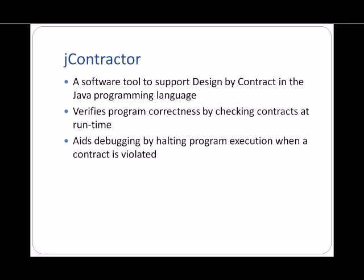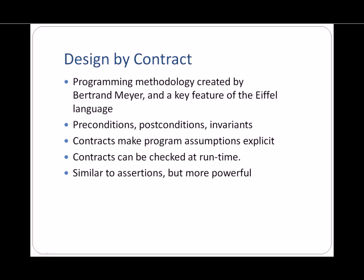JContractor is a software tool to support the design-by-contract programming methodology in the Java programming language. Design-by-contract is a way of designing computer programs in which the programmer describes the operation of the system through formal contracts.